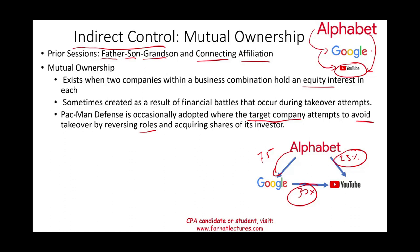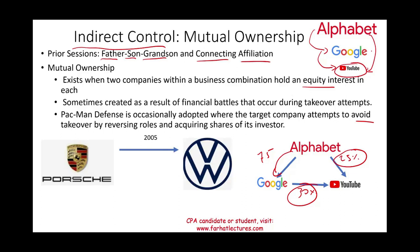A case in point is Porsche. In 2005 they tried to take over Volkswagen and started buying Volkswagen shares. In 2008, when the financial crisis hit and fewer people were buying Porsche, Volkswagen tried to buy Porsche shares when the stock price dropped. By 2012 Volkswagen took over Porsche — so Porsche tried to buy Volkswagen but Volkswagen ended up buying Porsche.